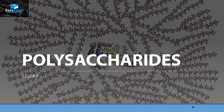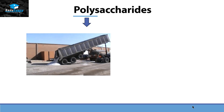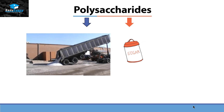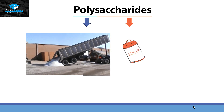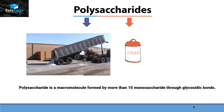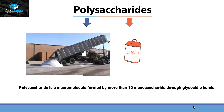Hello friends, this is Seher from Easy Peasy and the topic we are going to discuss today is polysaccharides. If we look at the word polysaccharides, it consists of two different words: poly means many or abundant, and saccharide means sweet or sugar. So the definition of polysaccharide is that it is a macromolecule formed by more than 10 monosaccharides through glycosidic bond.